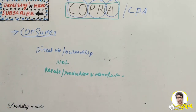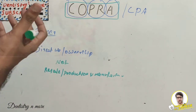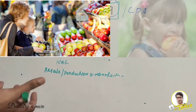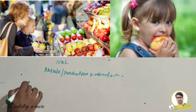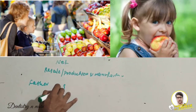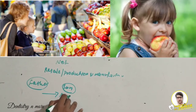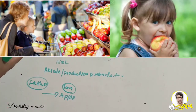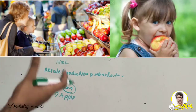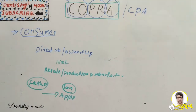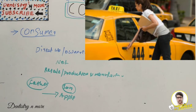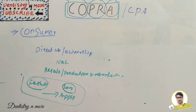For example, your father buys an apple for you and you consume it. So both the father and the son or daughter are treated as consumers. The same concept applies to hiring a taxi to go to your workplace, school, or college.